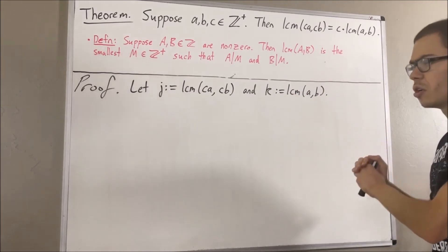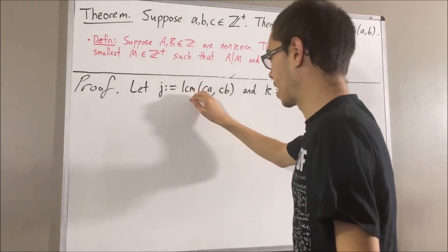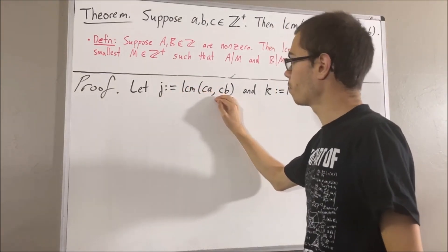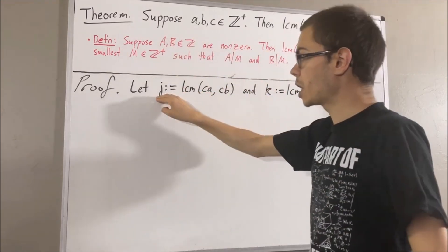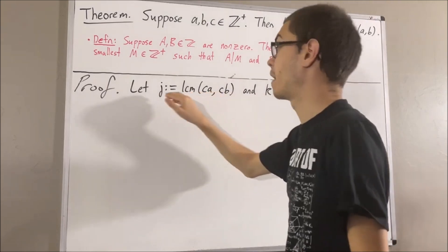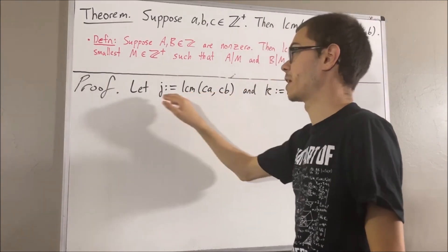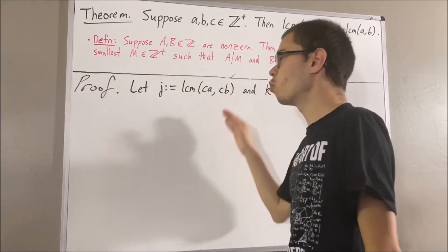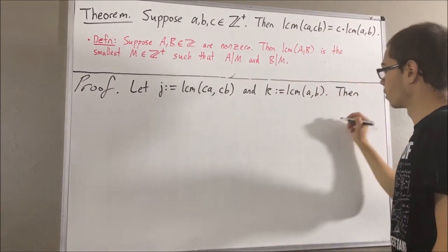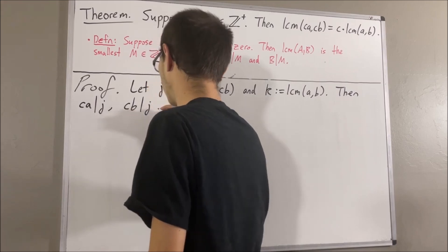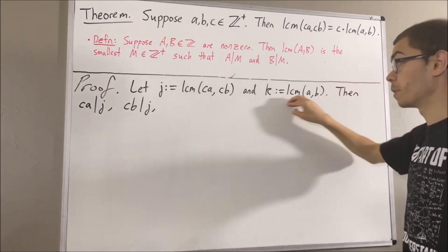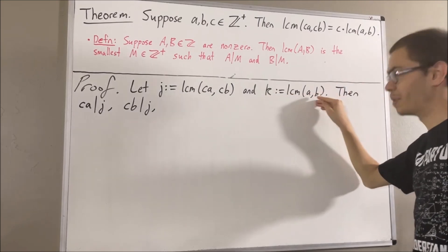Now, what does it mean for j to be the least common multiple of ca and cb? By our definition, it means that j is the smallest positive integer such that ca divides j and cb divides j. So we know that ca divides j and cb divides j. Applying the definition of least common multiple again, we know that a divides k and b divides k.